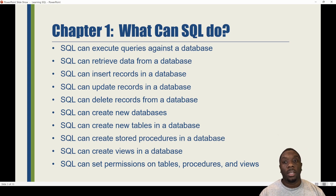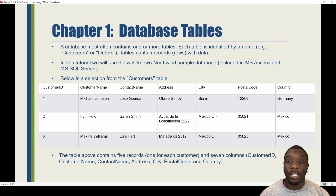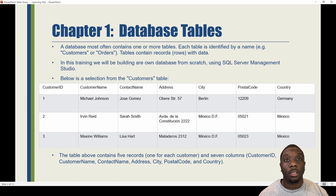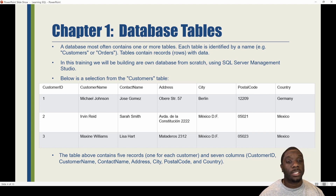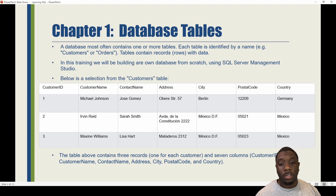Next, we have SQL database tables. A database most often contains one or more tables, and each table is identified by a name — for example, 'Customers' or 'Orders.' Tables contain records, which are rows with data. In this training, we will be building our own database from scratch using SSMS, which is short for SQL Server Management Studio. Below is a selection from the Customers table as an example of how we will be building our database.